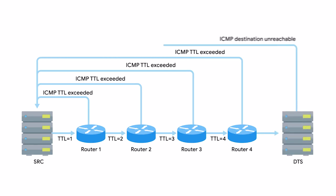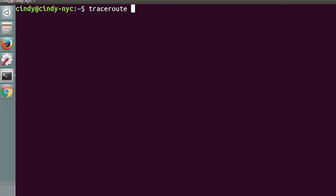By doing this, Traceroute makes sure that the very first packet sent will be discarded by the first router hop, resulting in an ICMP time exceeded message. The second packet will make it to the second router, the third to the third, and so on — until the packet finally makes it all the way to its destination. For each hop, Traceroute will send three identical packets. Just like with ping, the output of a Traceroute command is pretty simple.